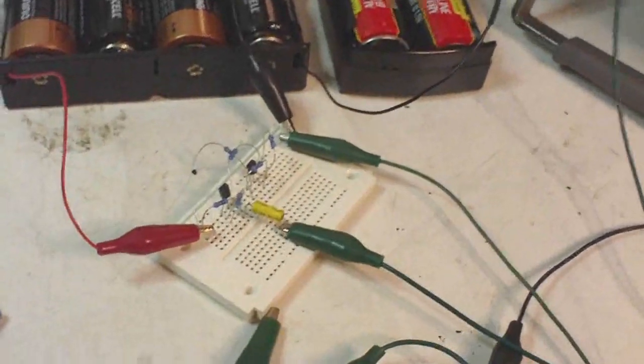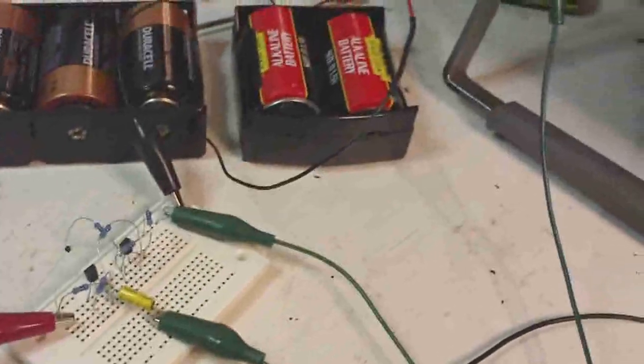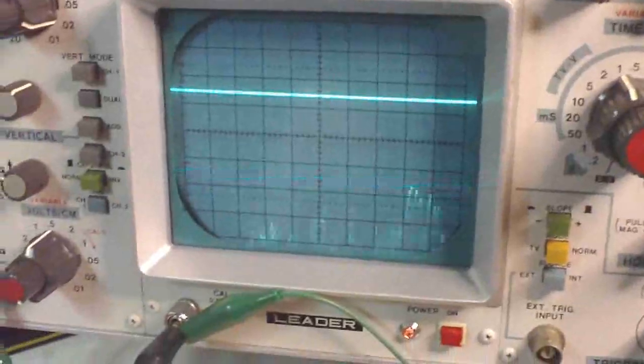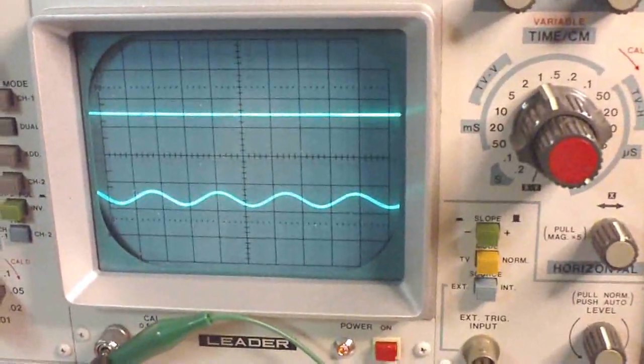I've got the first stage all hooked up, and on the scope, the bottom trace here is showing the input.